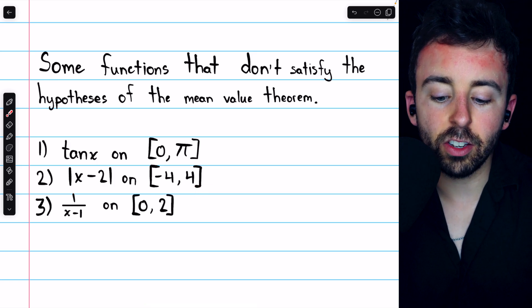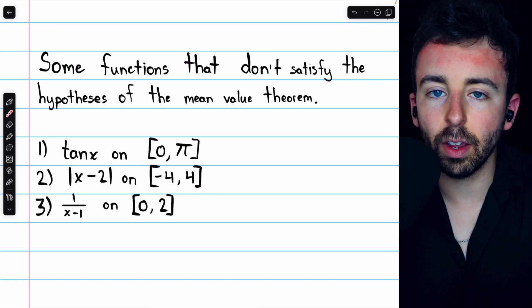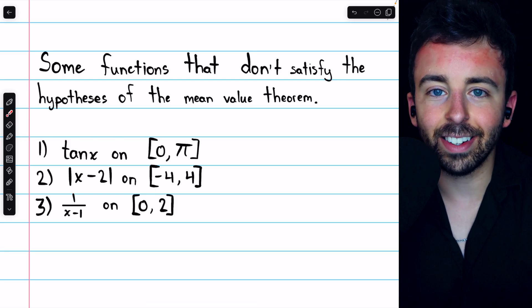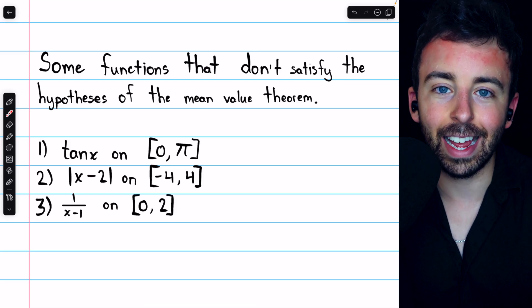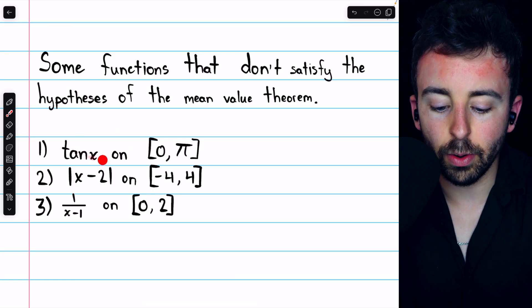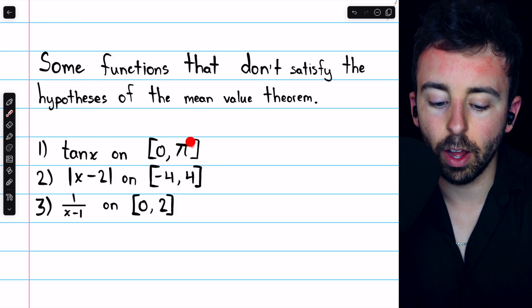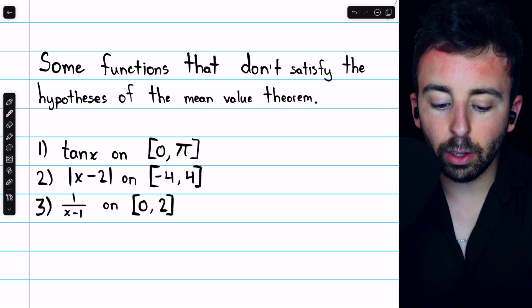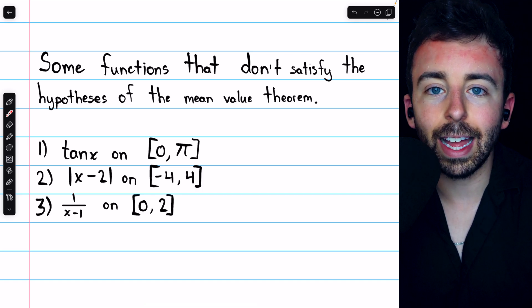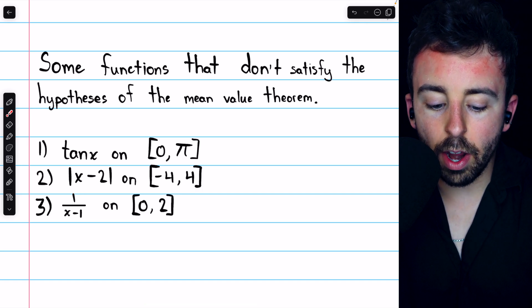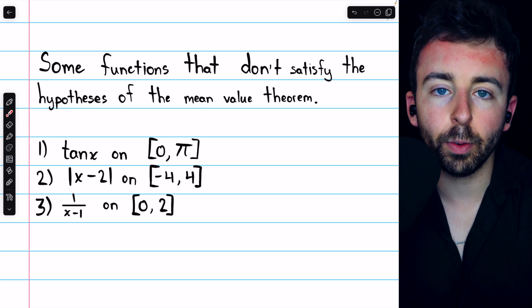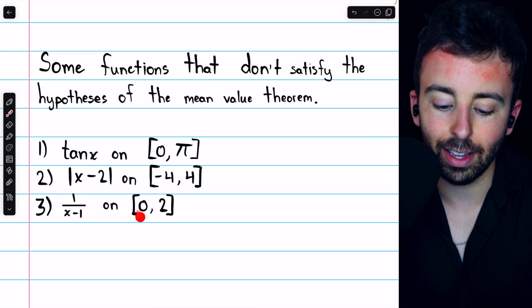And just to finish up, here are some examples of functions that don't satisfy the hypotheses of the mean value theorem. Tangent x is not defined at pi over two, so it's not continuous and certainly not differentiable on this interval. The absolute value of x minus two is continuous on this interval, but it fails to be differentiable at x equals two. And one over x minus one is neither continuous nor differentiable at x equals one, which is in this interval.